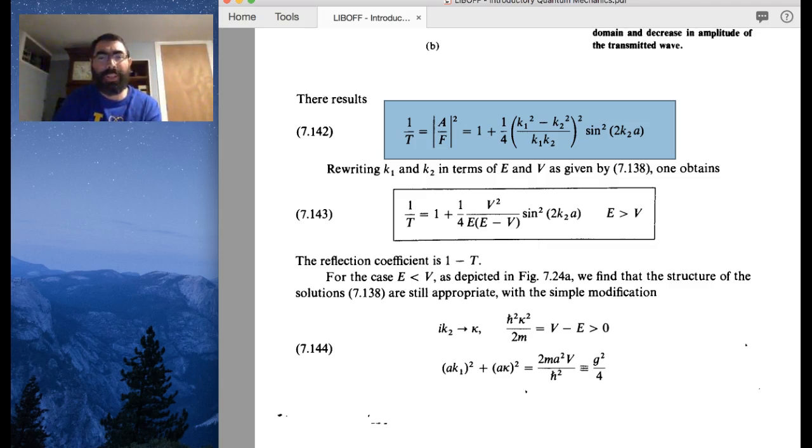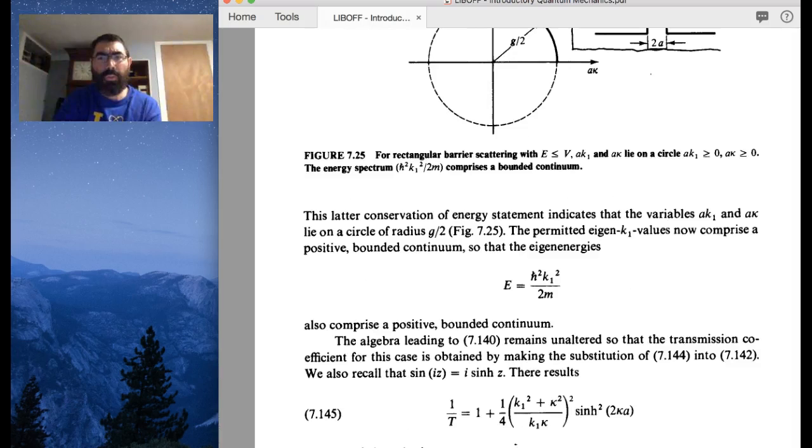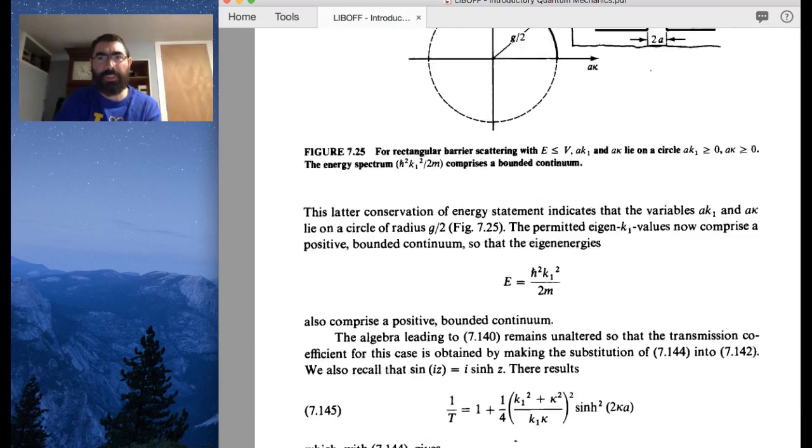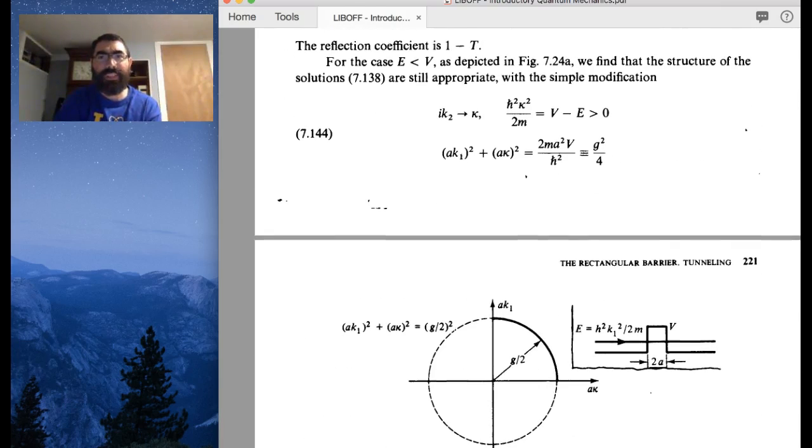So now what I want to do is replace that k2 with the, where is it, I want to replace the k2 where now IK2 becomes kappa.